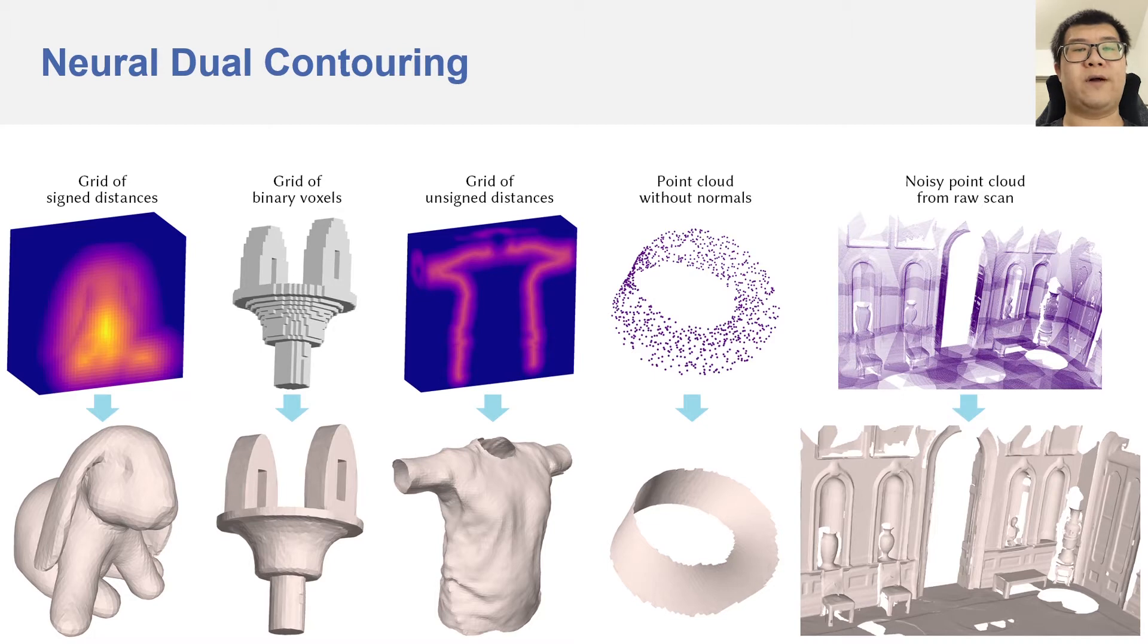Our method generalizes to a broad range of shape types, such as CAD models with sharp edges, organic shapes, closed with open surfaces, scans of indoor scenes, and even the non-orientable Möbius strip.